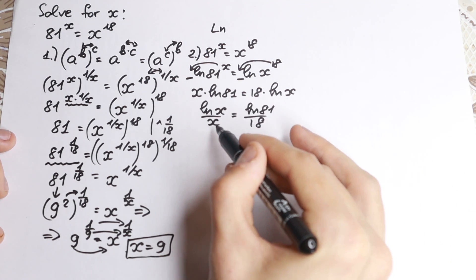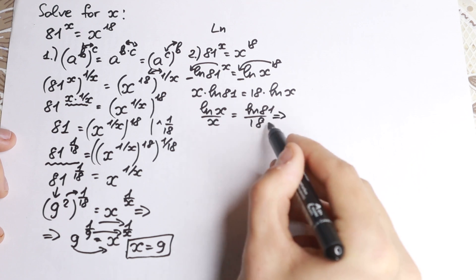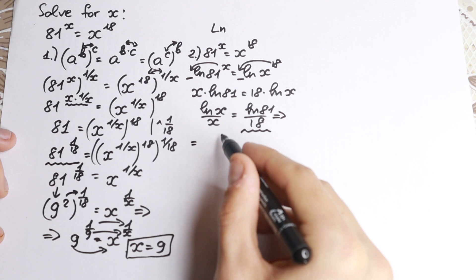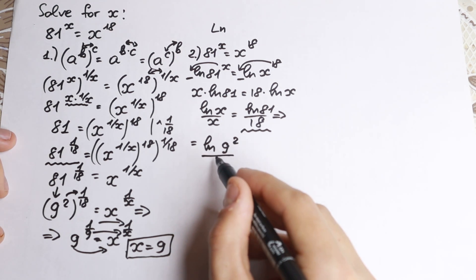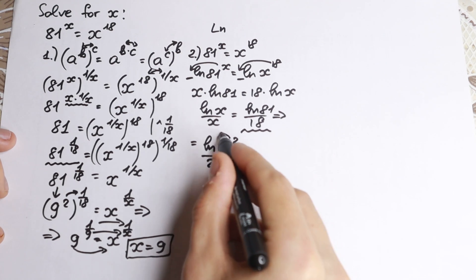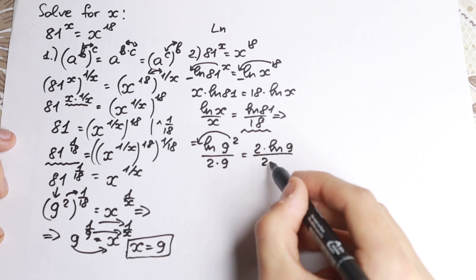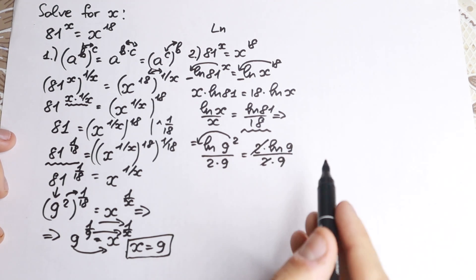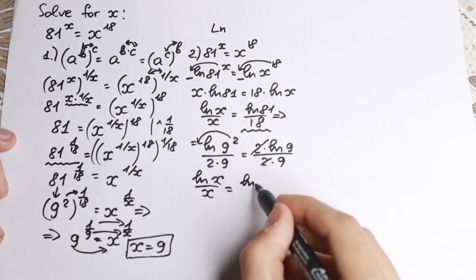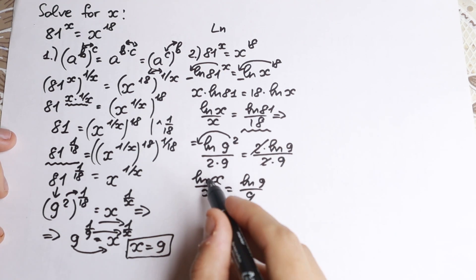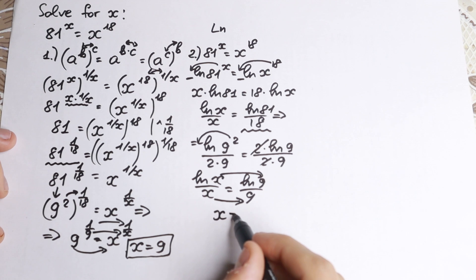Now let's simplify the expression with natural log. We can write 81 as 9 squared, and 18 as 2 times 9. So we have 2 times natural log 9 over 2 times 9. Cancel the 2s, and the magic moment: natural log x over x equals natural log 9 over 9. With natural log x in the numerator, x in the denominator on the left, and 9 in the same pattern on the right, the one and only solution is x equals 9.